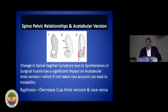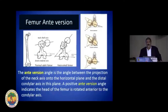There is a lot of recent literature on spine-pelvic relationships and acetabular version. The take-home message is: if the spine is fused in kyphosis — surgically or due to pathology — decrease the anteversion of the cup. If the fusion is lordotic, then increase it.